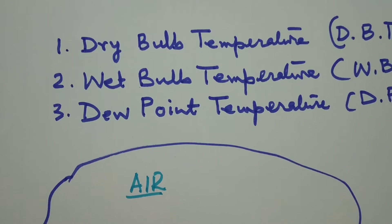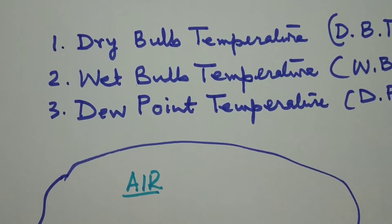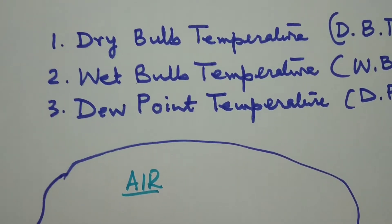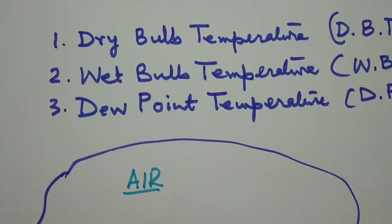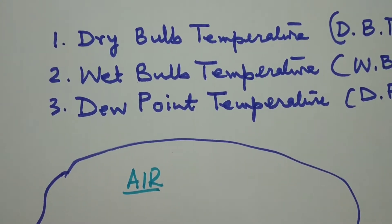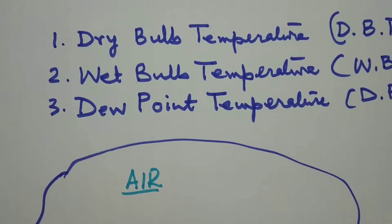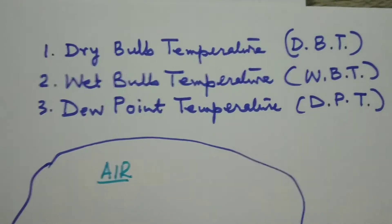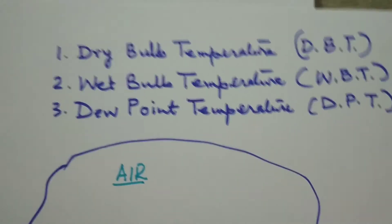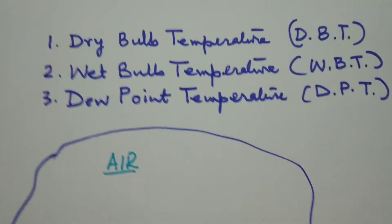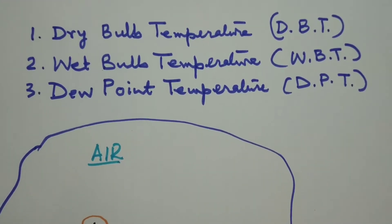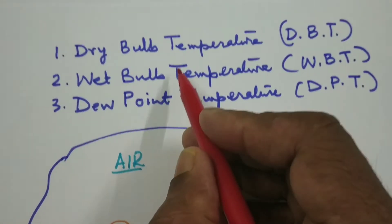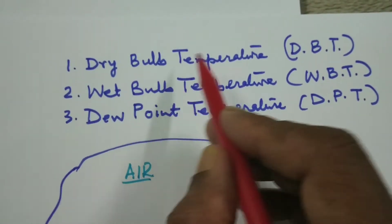To start understanding air conditioning, we should first understand the properties of air. We can start with the first topic, which is temperature — called dry bulb temperature of the air. If we talk about air, there are three types of temperature which are important to learn. The first is called dry bulb temperature.